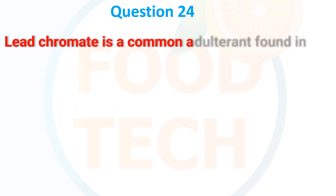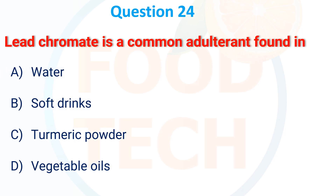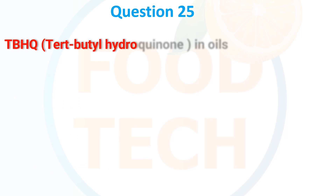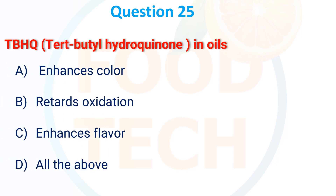Lead chromate is a common adulterant found in: A. Water, B. Soft drink, C. Turmeric powder, D. Milk and dairy products. The correct answer is turmeric powder.